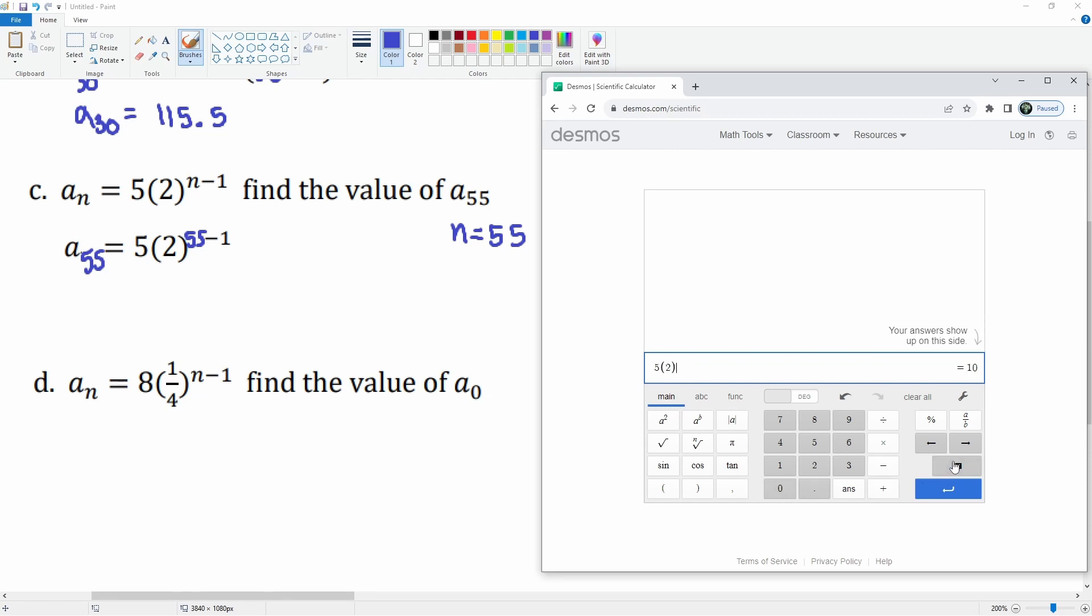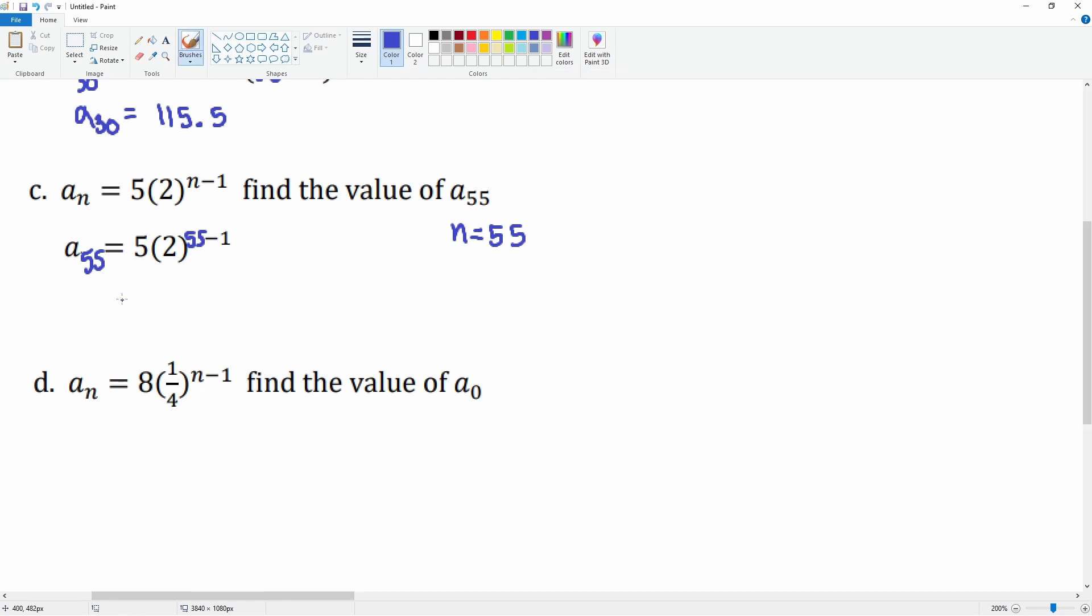Close the parentheses. So there you go, that would be my answer. It's 9.00 something times 10 to the 16, so I can write that 9 times 10 to the 16 would be my 55th term.